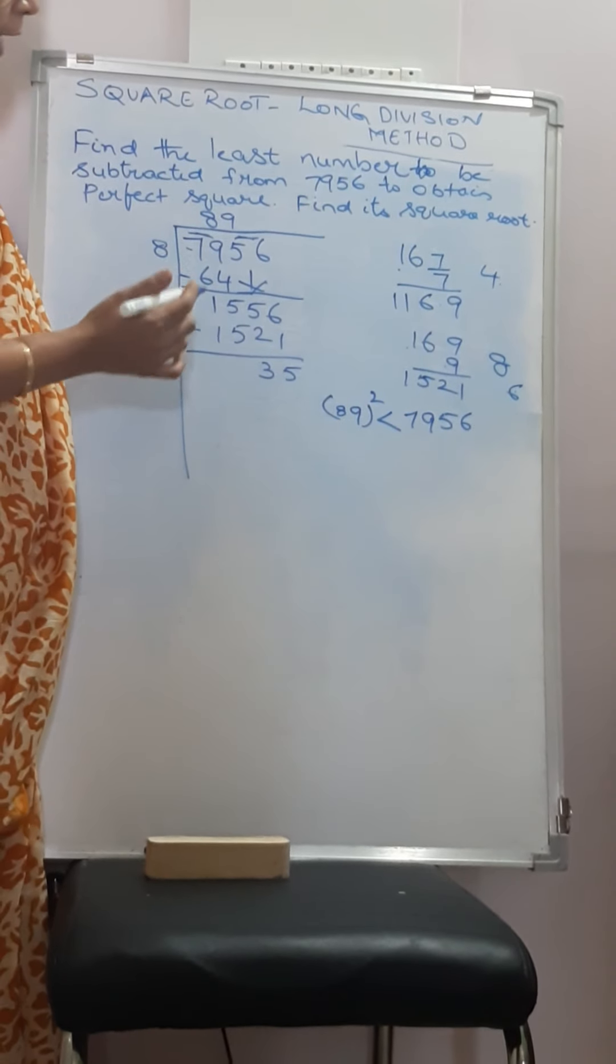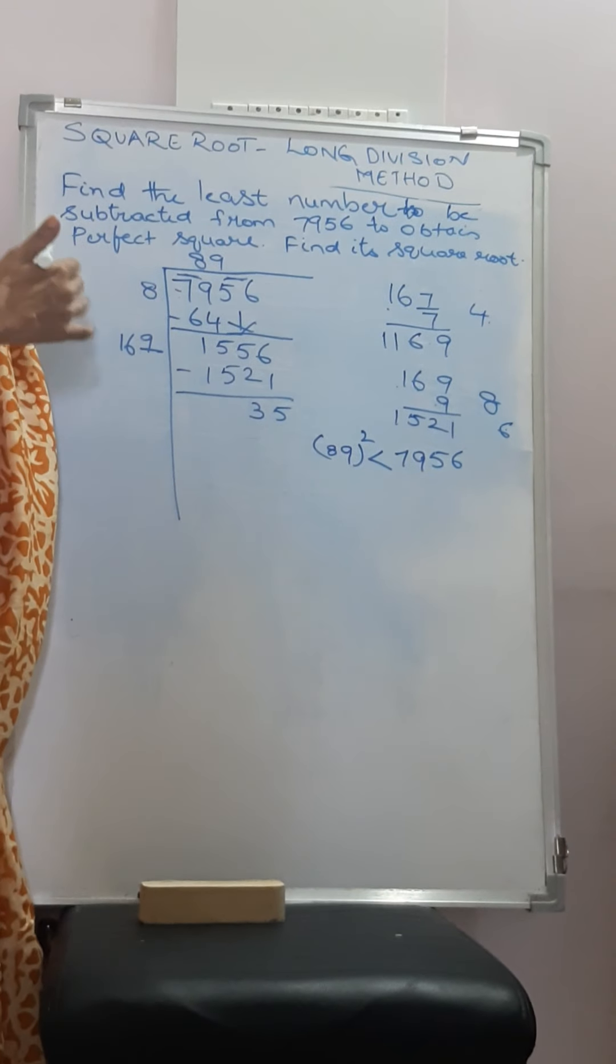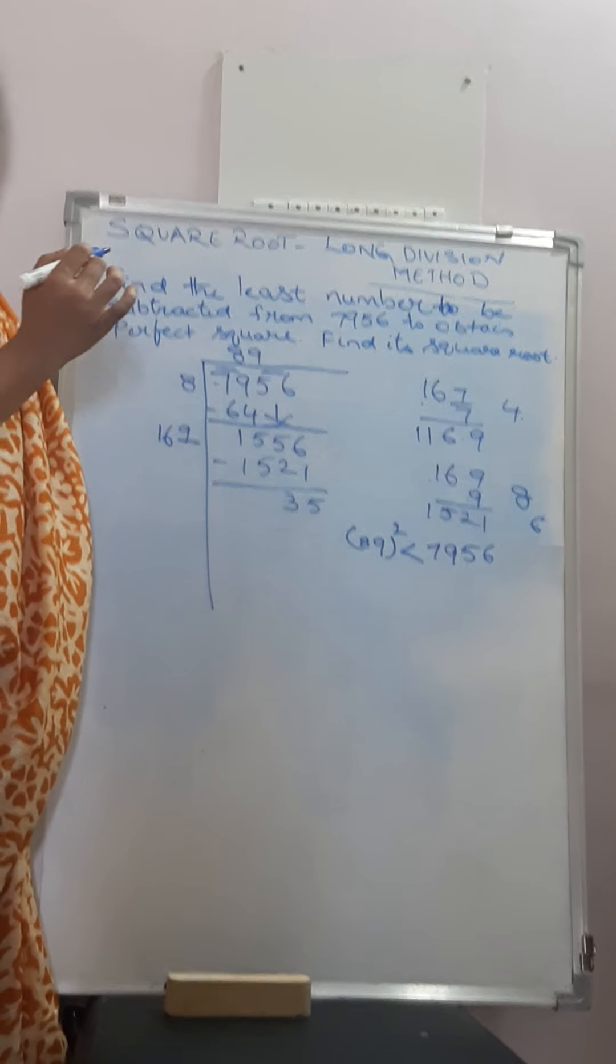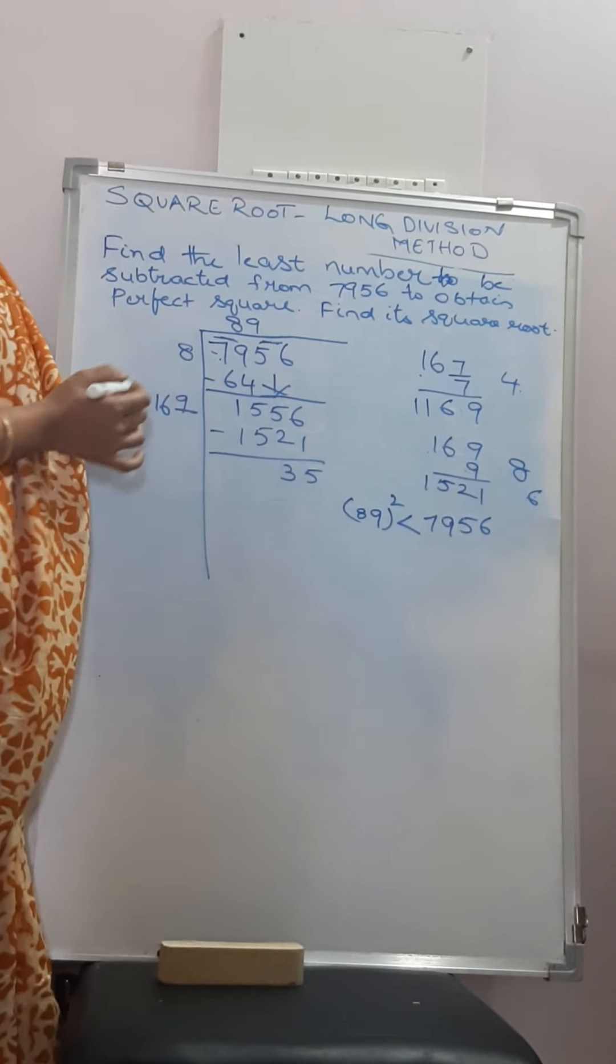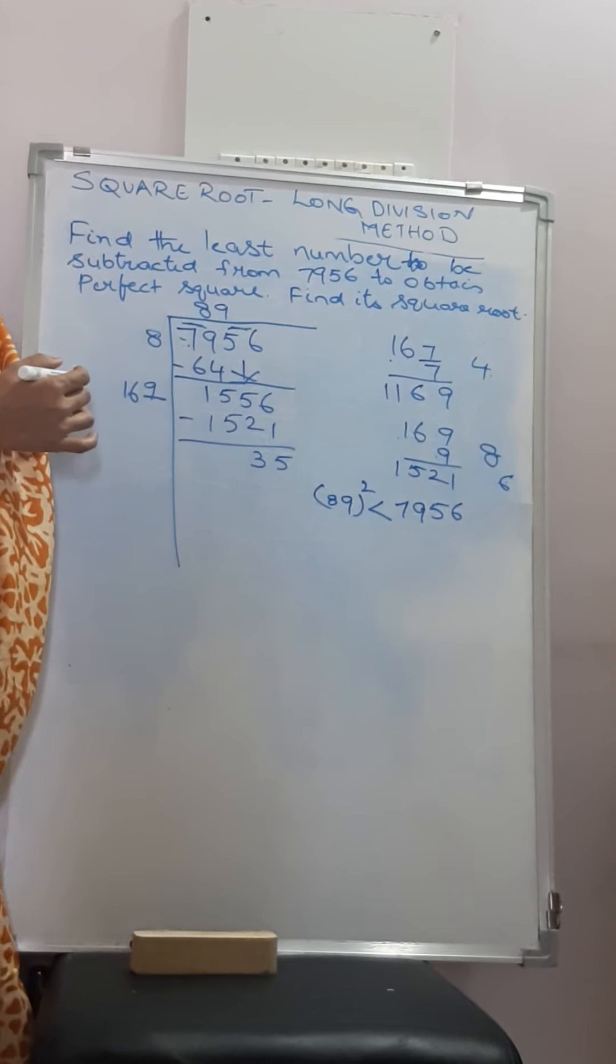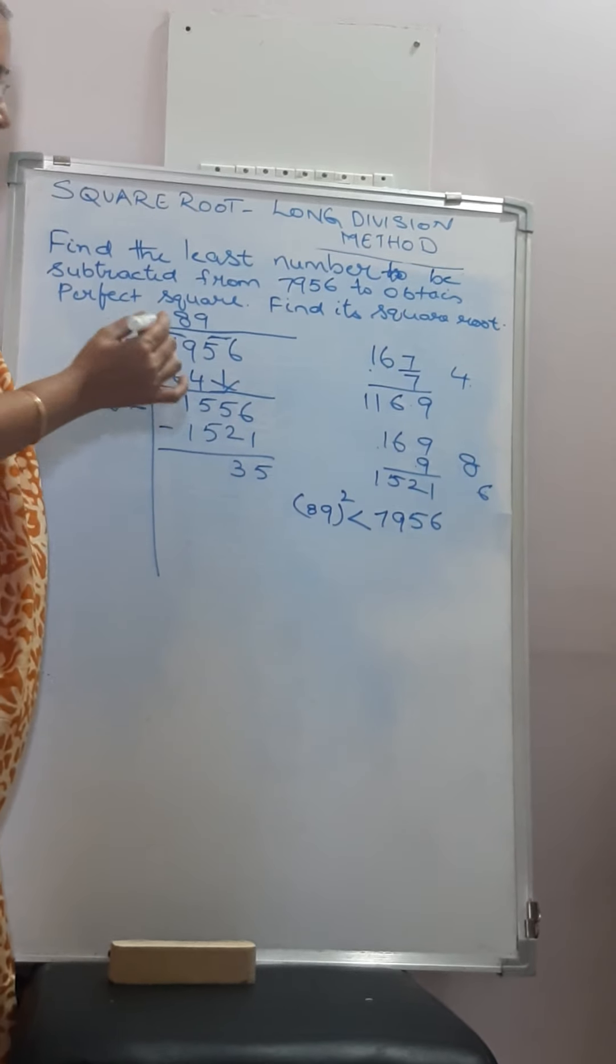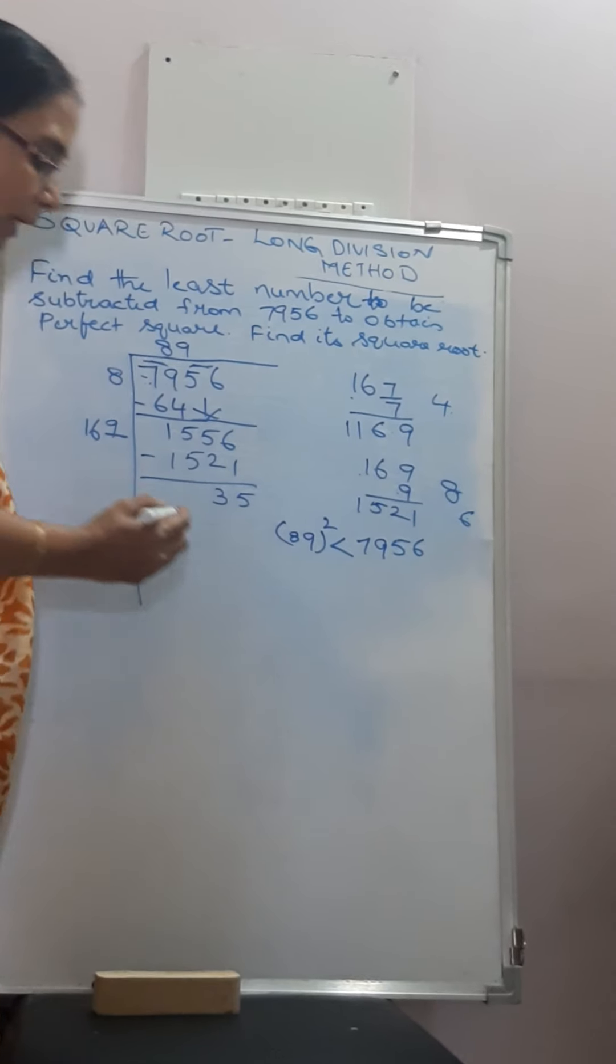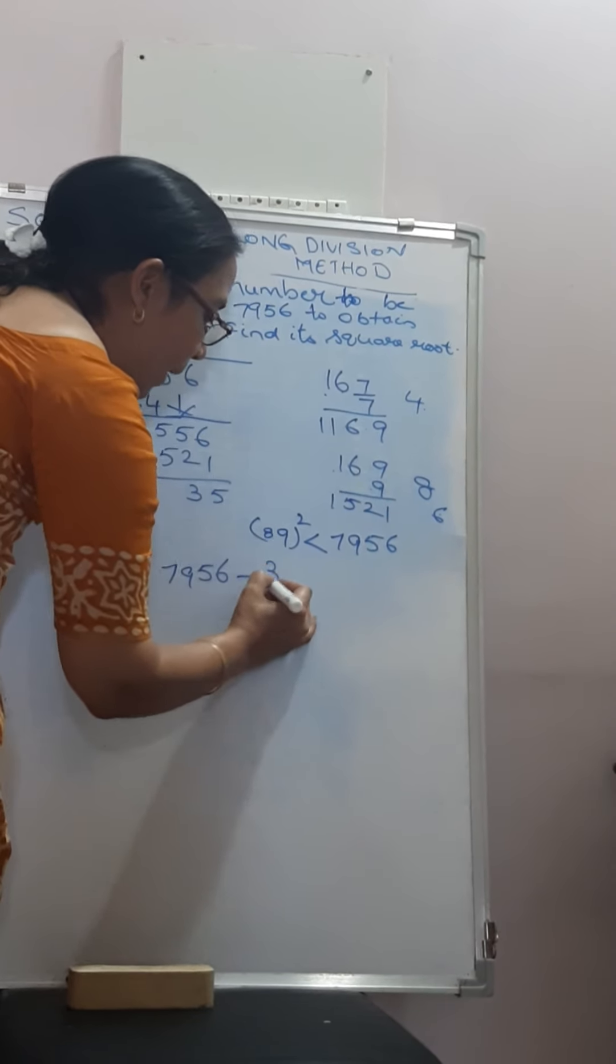Now what should be subtracted to make a perfect square? When we are subtracting, the number becomes less. When we are adding, the number becomes greater. That means we should find out a perfect square number which is less than 7956. What is the perfect square number which is less than 7956? To do that, we will subtract this remainder from this number. That is 7956 minus 35.